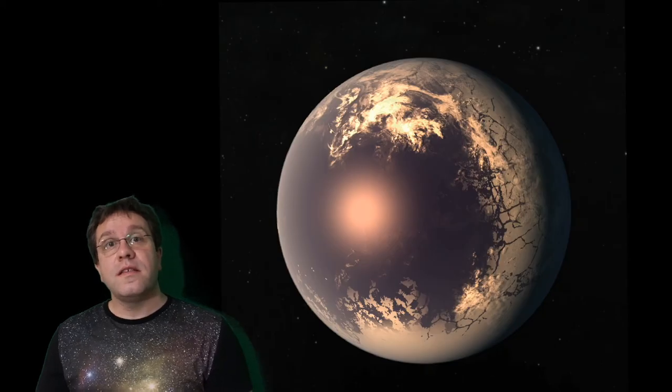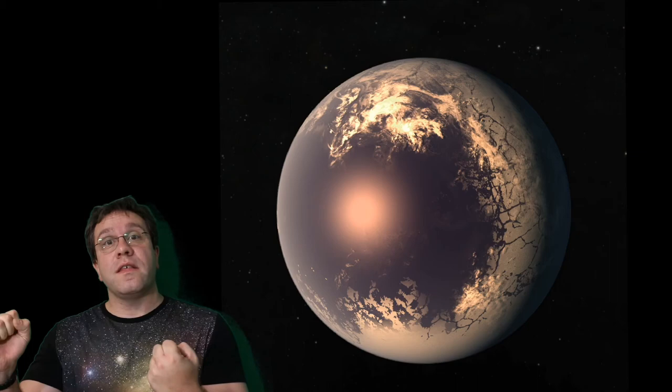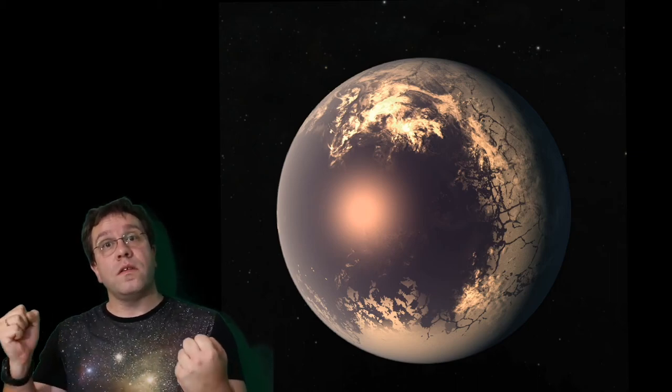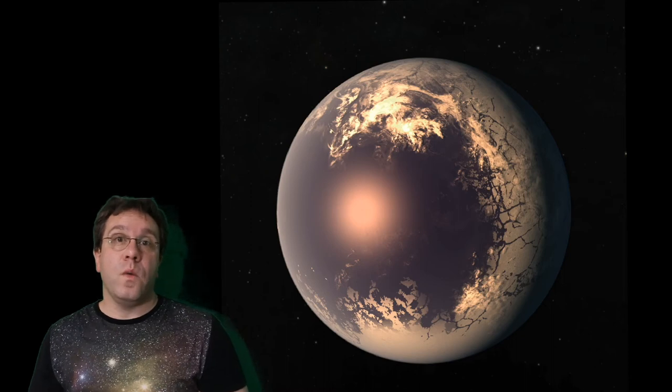Now we think there are planets like this orbiting other stars that essentially don't spin. They spin very slowly at the same speed they go around the star. So they always keep one face of the planet towards the star and one face pointing away.